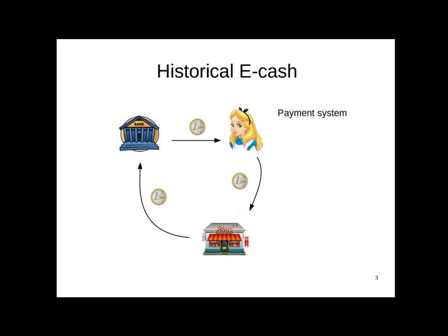E-cash is a basic payment system with three types of entities: a bank, which is authorized to issue coins to a user—here Alice—who is allowed to spend this coin at the shop, which can then deposit this coin at the bank. While it is easy to make such a system with basic cryptographic functionalities such as signatures, the goal here is to protect the privacy of the users and the merchants against a curious bank. This model has been developed by Chaum in the 80s, and I will be more precise about what transaction anonymity means in his work.